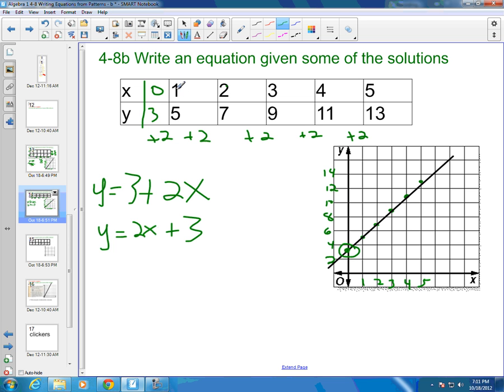And normally when we write equations, we write our x term first, and then we write our constant second. So let's go back and test this. If I put a 1 in here, so this would be y equals 2 times 1 plus 3. So if I put a 1 in here, 2 times 1 is 2 plus 3 is 5. That works.